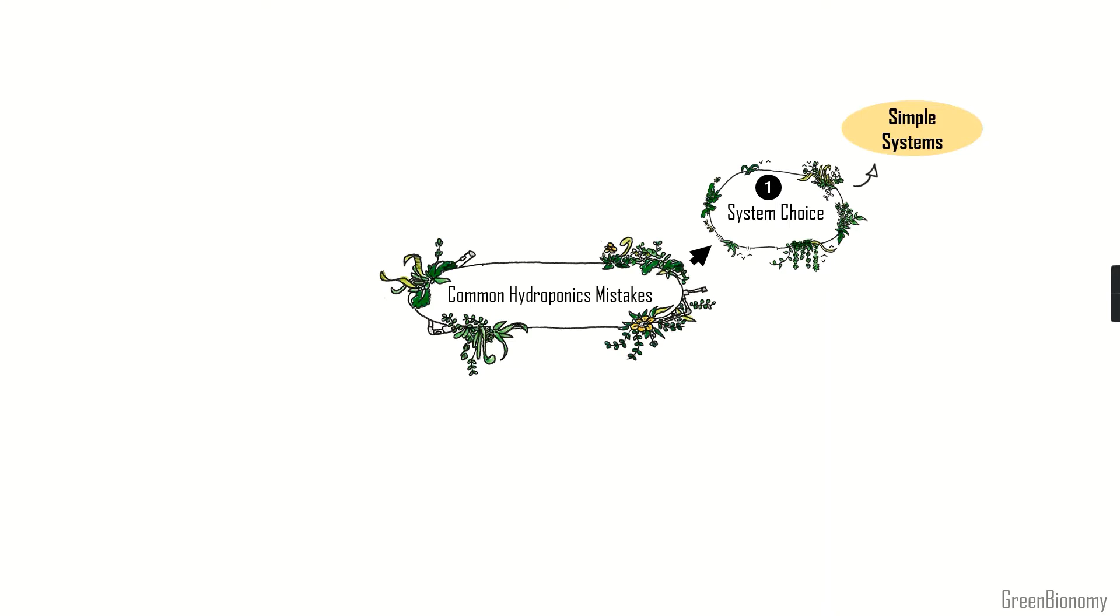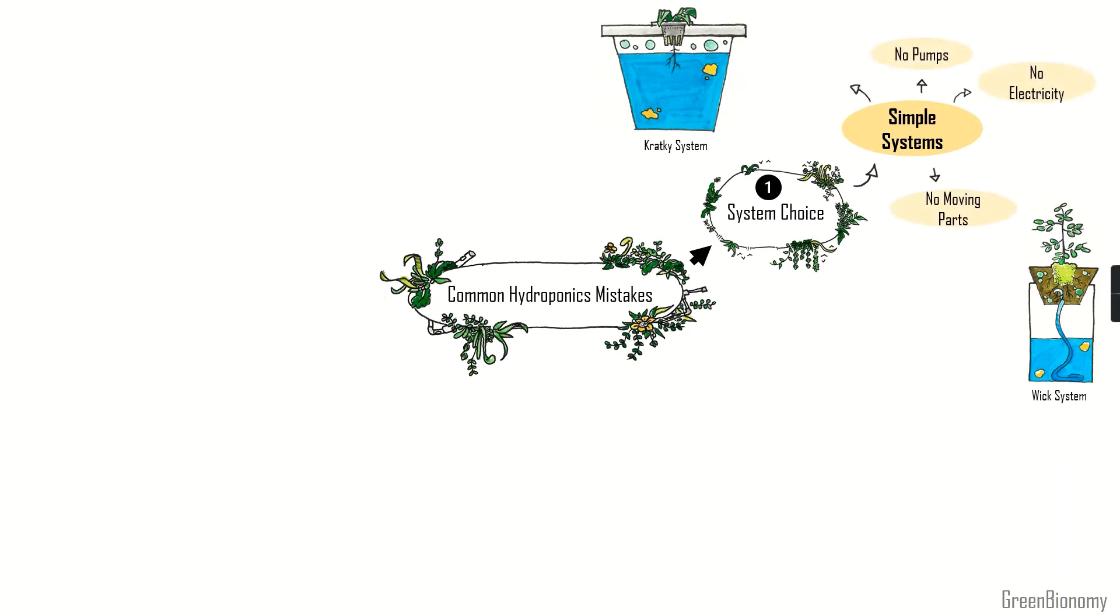Common recommendations for starting out are the wick and kratky systems. Both are passive which means they have no moving parts and do not require any pumps or electricity. Also, the maintenance and monitoring required like adjusting pH or changing water and other stuff is minimal. For example, a kratky system can be built, forgotten while the plant grows and harvested when the plant is mature. I will make some detailed video explaining how they work so stay tuned.